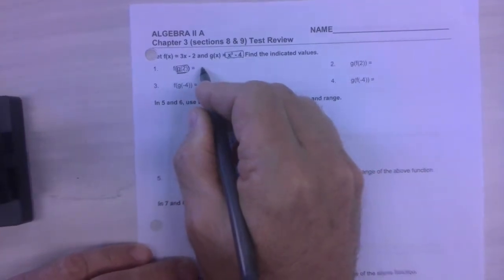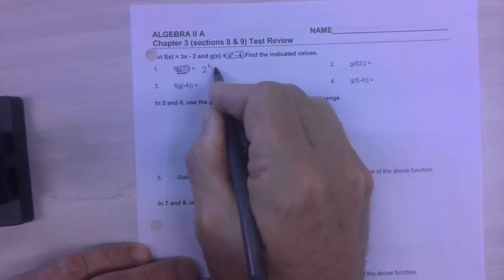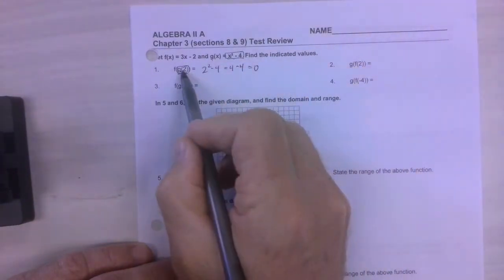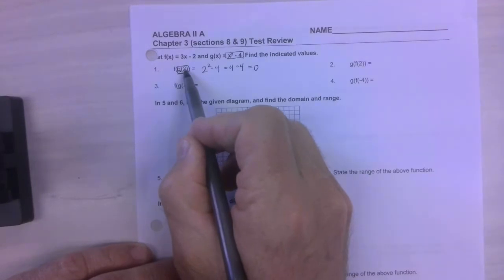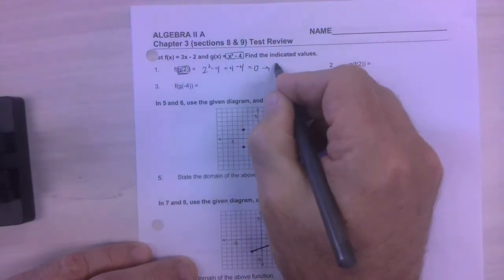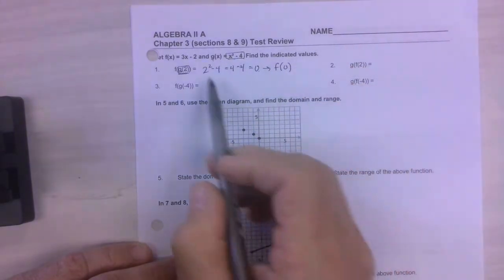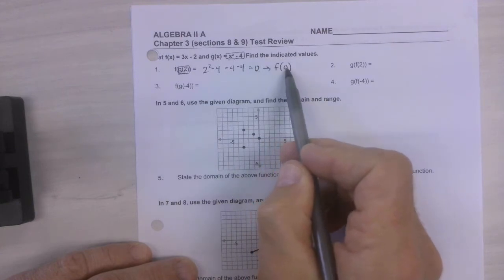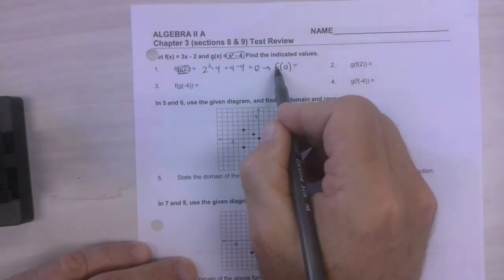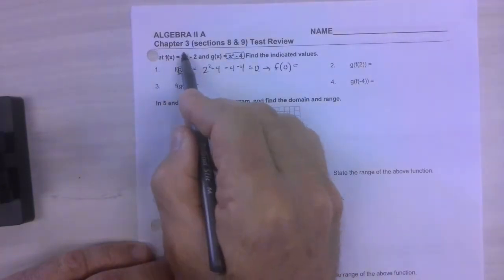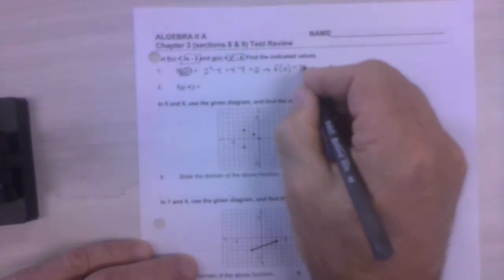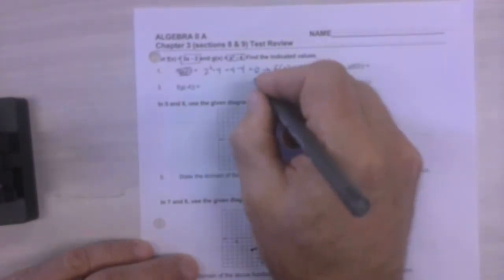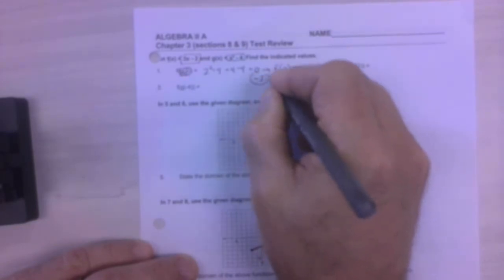So we start by saying okay, 2 squared minus 4, which is just 4 minus 4, which is 0. But now that's what g of 2 equals. So now this problem has another step because you've got to work inside out. So because g of 2 equals 0, now we need to find f of 0. It's a two-step problem, which now means find the equation defined by the letter f. There it is. That's the equation. So it's 3 times 0 minus 2, which is just 0 minus 2, which is negative 2. That'd be your final answer.